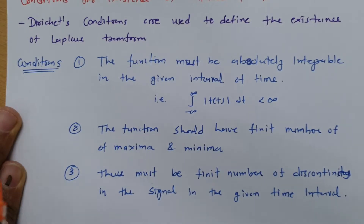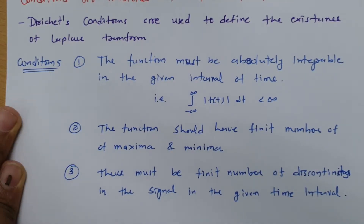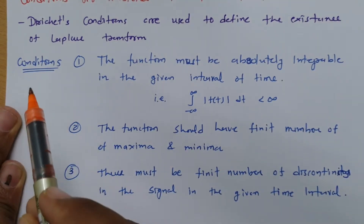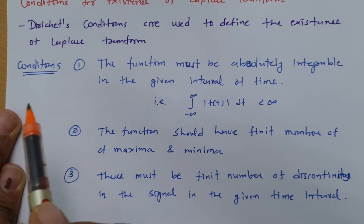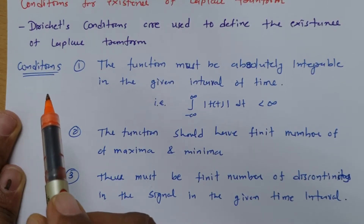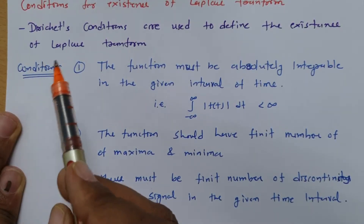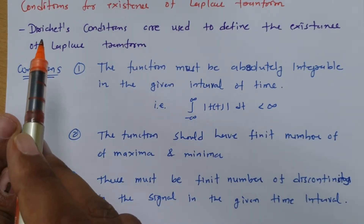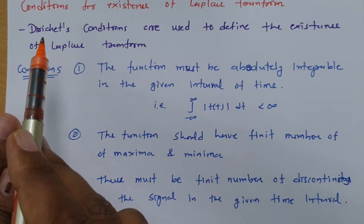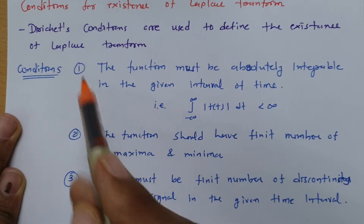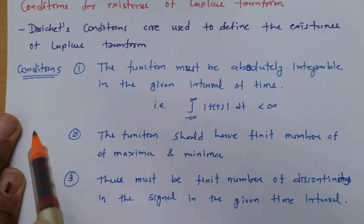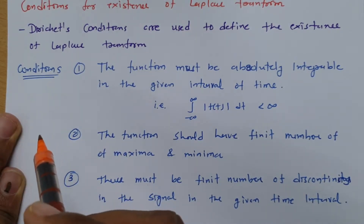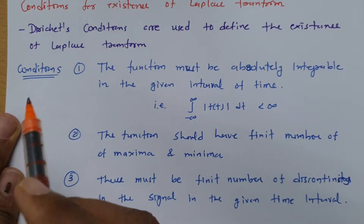Now in this session I will be explaining what are the conditions for existence of Laplace transform. To identify whether a Laplace transform exists or not, these three conditions are defined as per Dirichlet's principle. We can use these three conditions to determine whether the Laplace transform of a given signal exists or not.